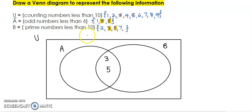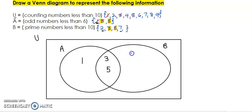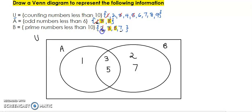The next thing we are going to do is look at Set A — what other members are there that we need to put in? We notice there is a 1, so we put 1 in Set A and cross it off. Now we look at Set B — are there any members we have not put in yet? We haven't put in 2 nor 7, so we are going to put 2 and 7 in Set B and cross them off.